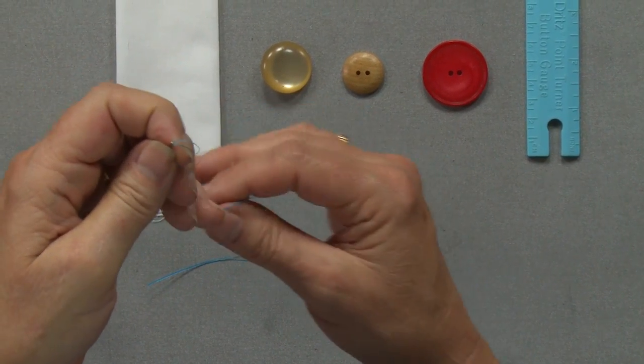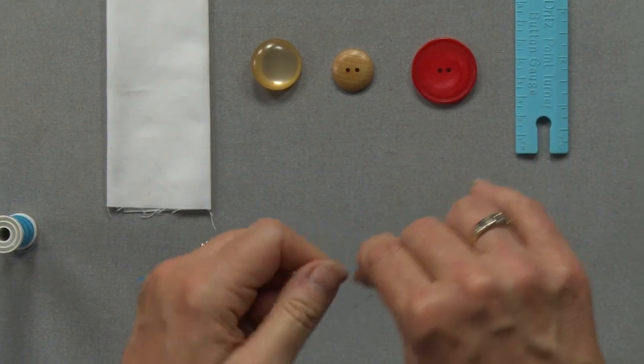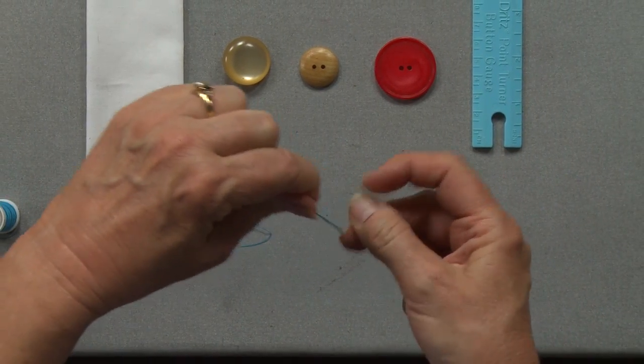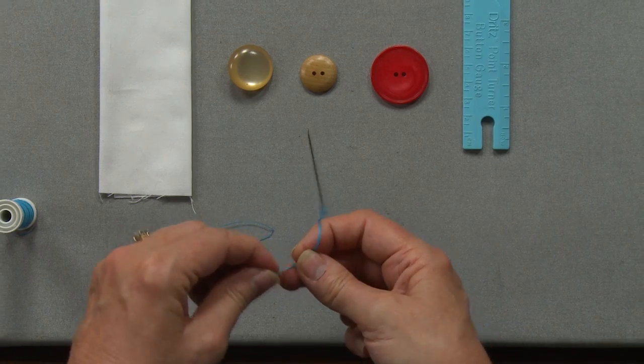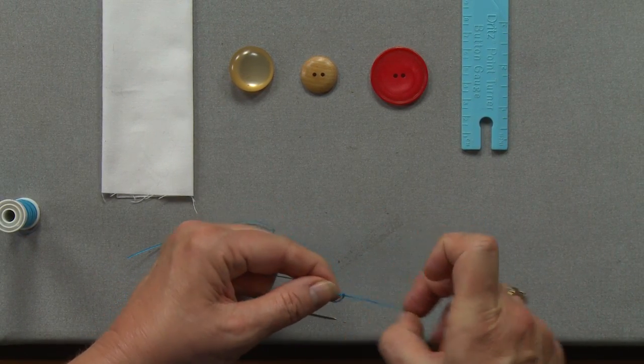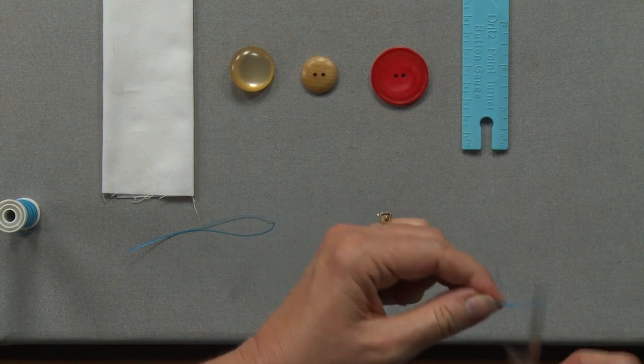Once you have the thread through, bring it down so that it is even at the ends or close to even and go ahead and make your knot. Now I'm working with four threads instead of one or even two.